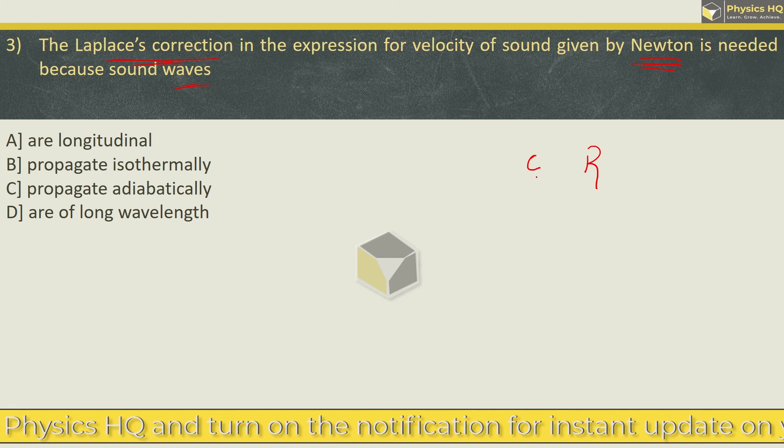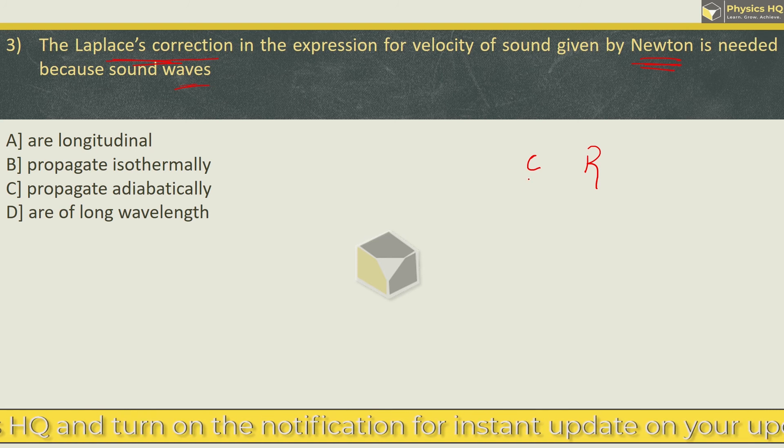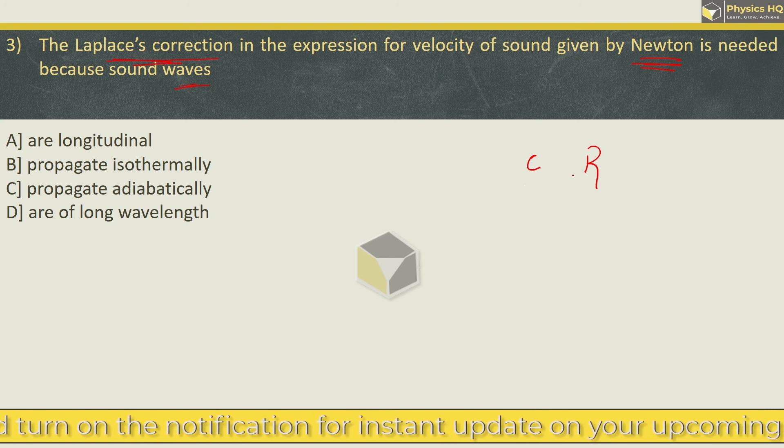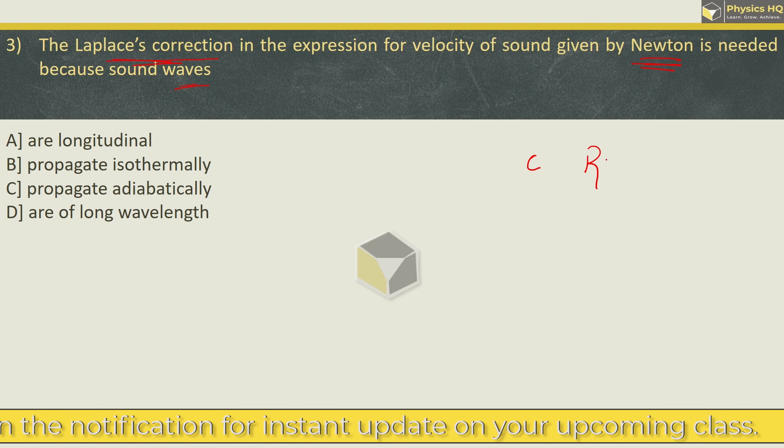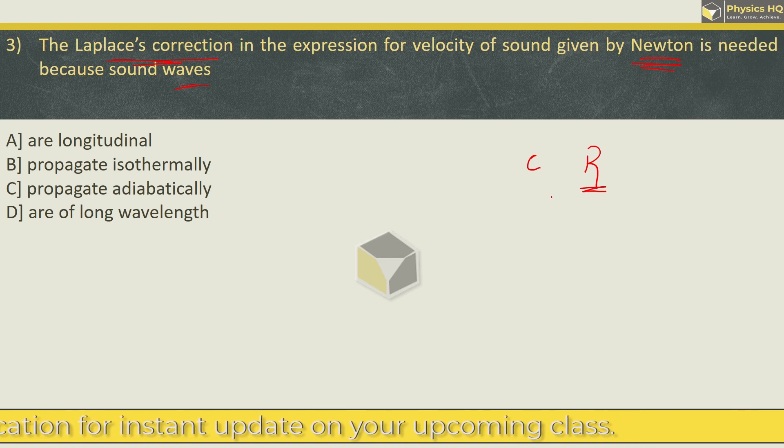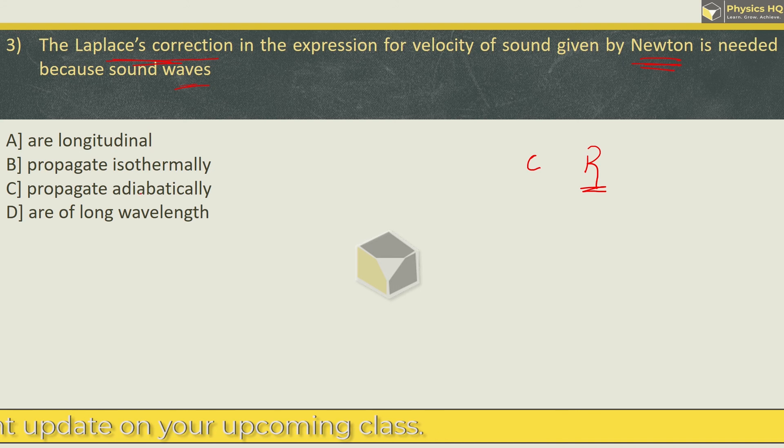Laplace gave the correction saying that when compression is generated, heat is generated. And when rarefaction comes, heat is given out. But the process takes place so quickly, heat exchange time is not needed. And therefore, the process becomes adiabatic.